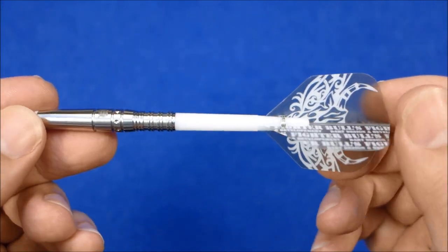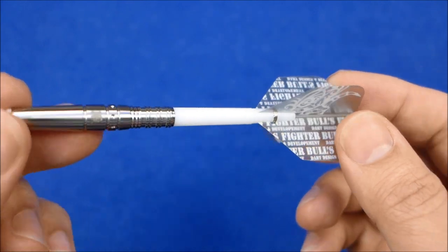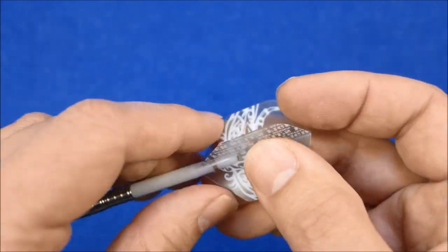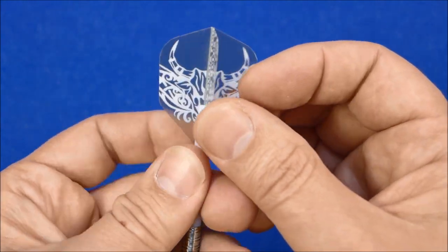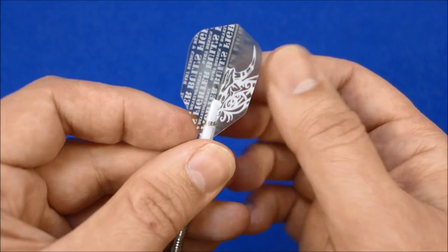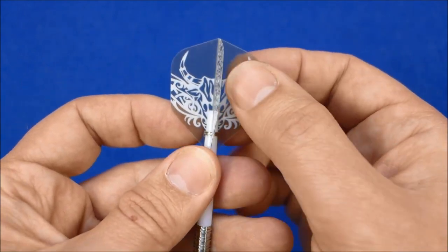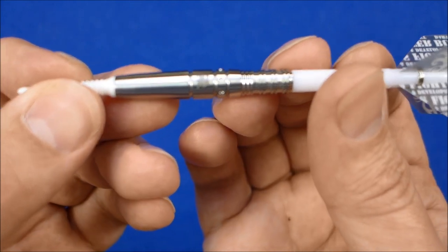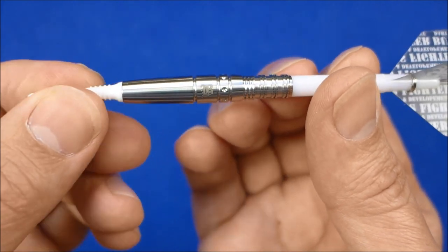And you've got your, I think they look to be about tweeny size stems with the stem clips and the Bulls Fighter standard shape flights. Kind of a clear with the printed design. So I'll let you look at the dart then I'll put the detail picture up with all the measurements.